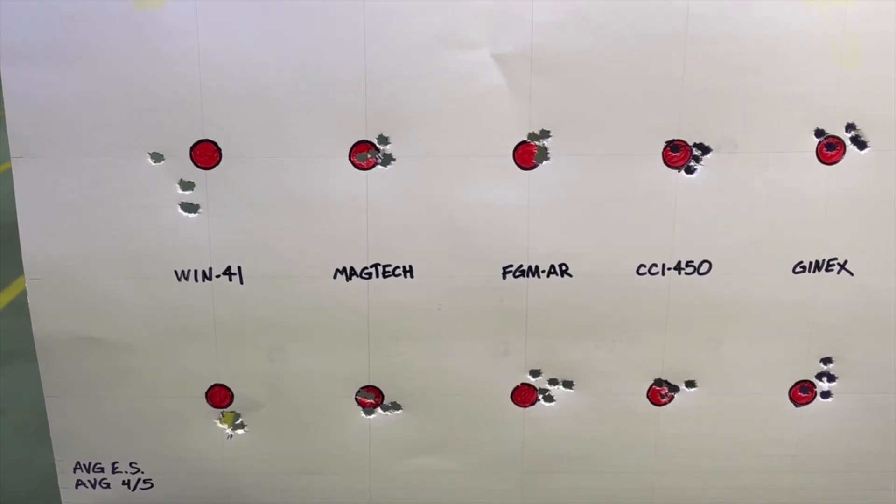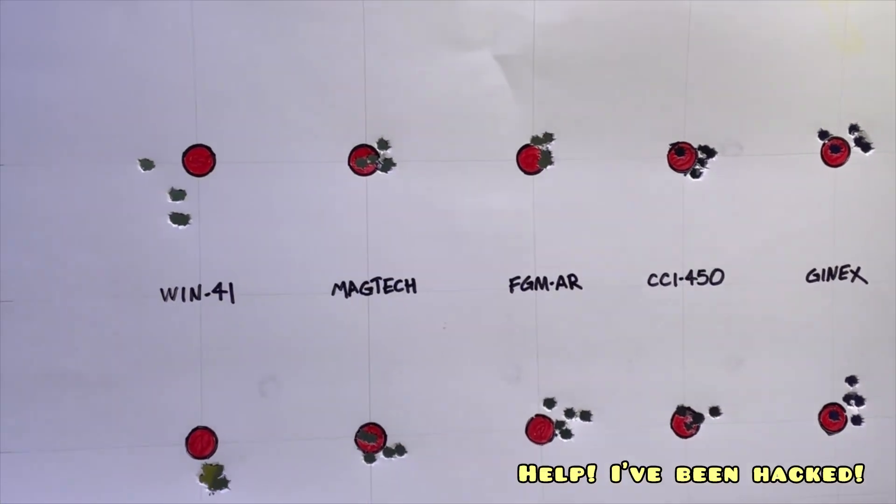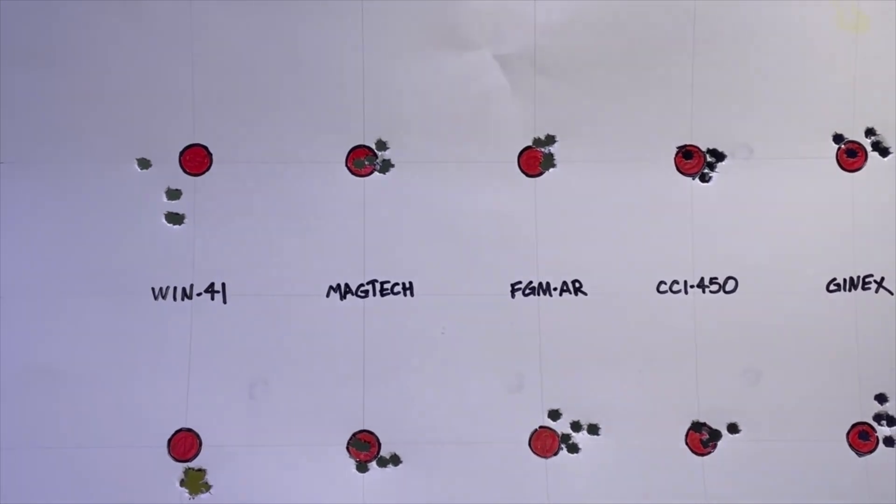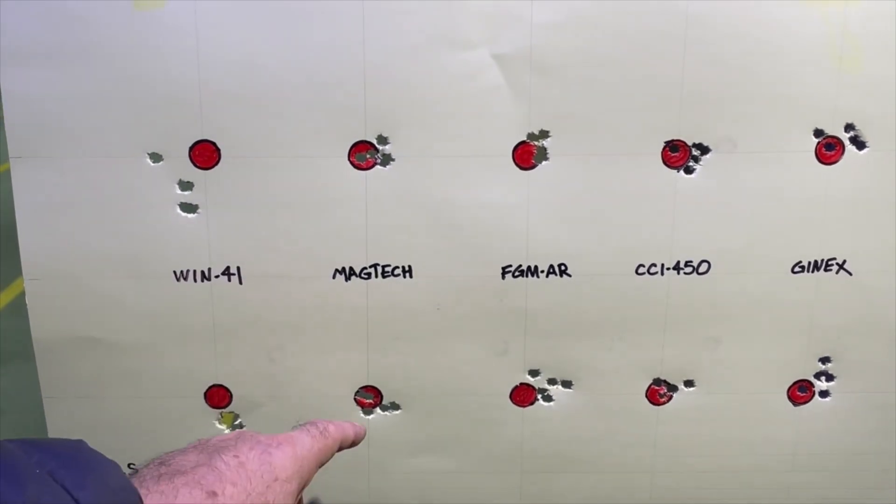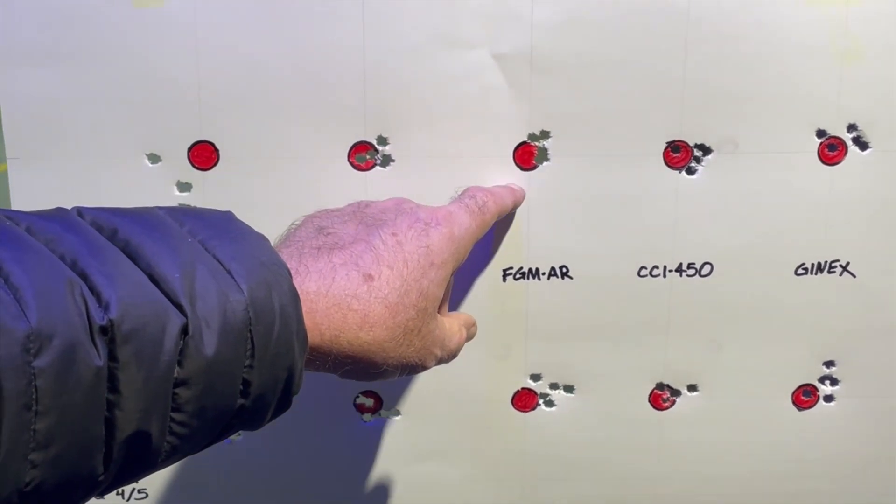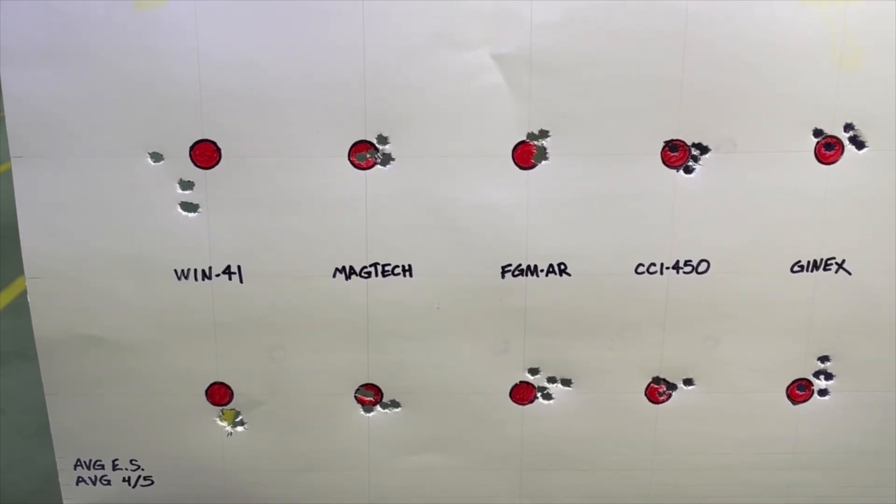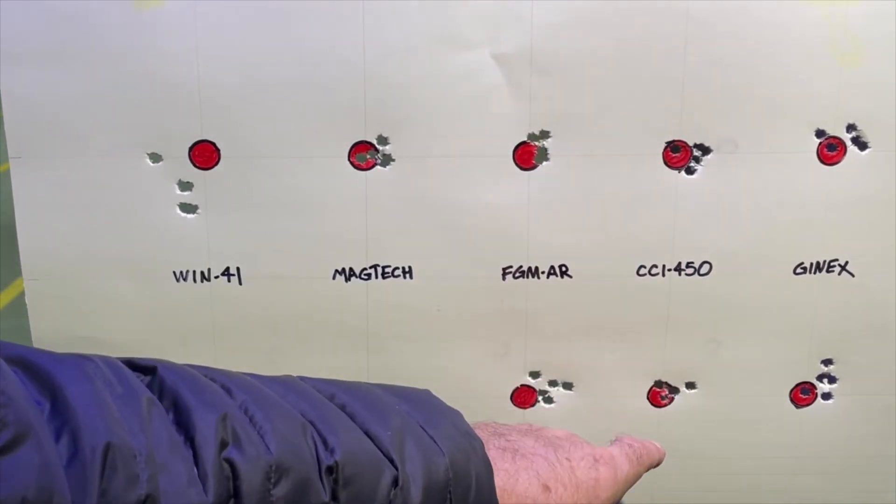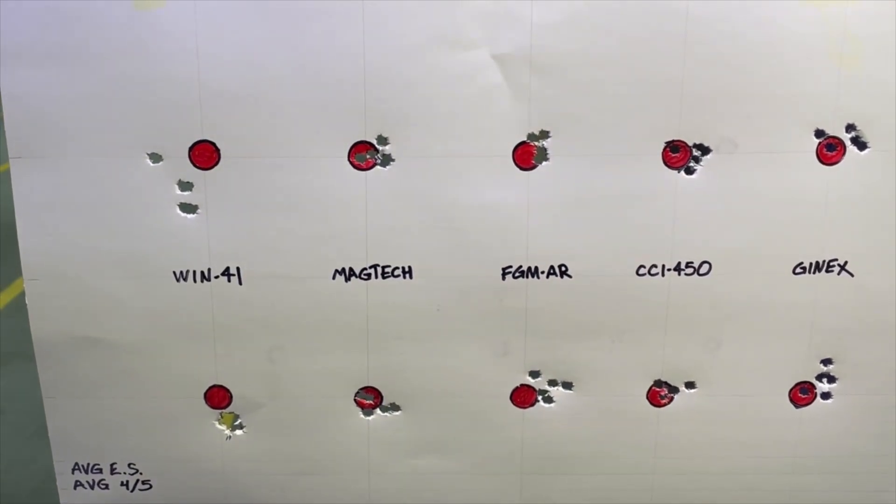All right, these all seem to have grouped very similarly. This was my cold barrel shot with the Winchester 41, and this is definitely my best group here. Can't tell what that is, but I believe that's probably a half inch or under. Magtech grouped pretty well. Federal gold medal AR grouped really well on my first group. Second group was a little scattered, I would attribute that to shooter error. CCI 450 grouped similarly both times, and the Gen X seemed to be the largest. But we will take these home, measure them, and see how they compare.